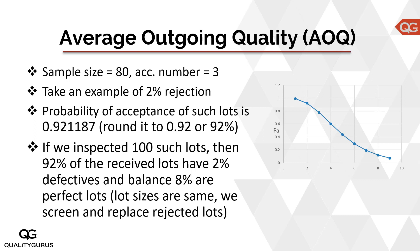When we reject the lot, that rejected lot will go through 100% screening and bad parts will be replaced by good parts. What we want to calculate is: using this acceptance sampling, what will be the quality we are receiving? As a first example, let's assume we have lots which have 2% defectives. From the table we made earlier when creating the OC curve, if a lot has 2% defectives the chance of that lot getting accepted is 0.921187 — roughly 92%.